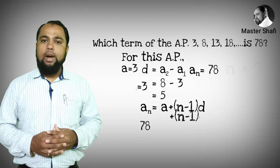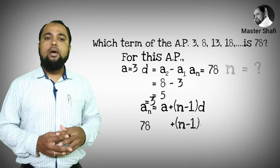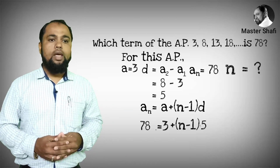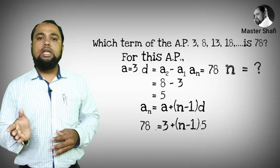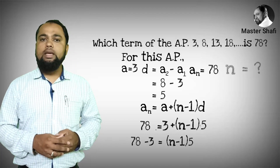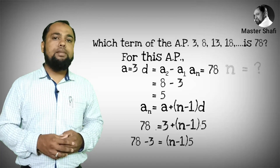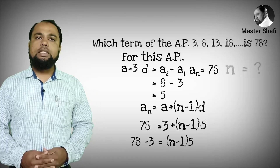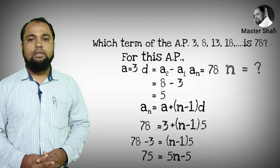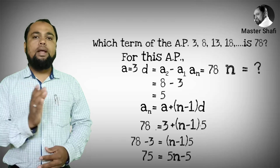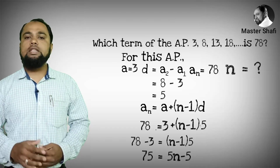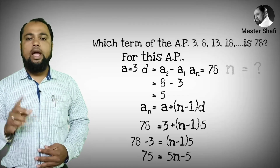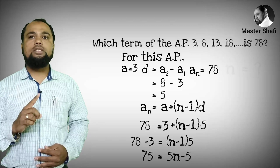We have 3 plus (n minus 1) into d, where d is 5. Taking 3 to the left-hand side gives 78 minus 3, which equals 75. Now multiplying out the bracket: 5 into n is 5n, and 5 into minus 1 is minus 5.